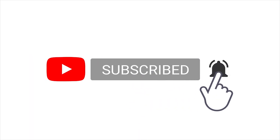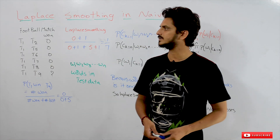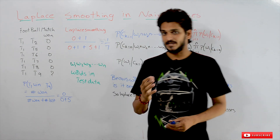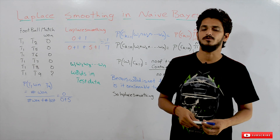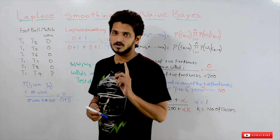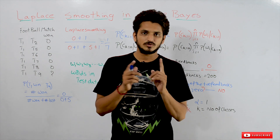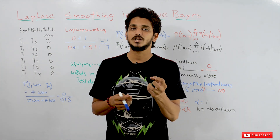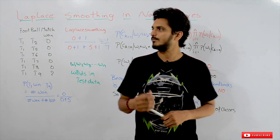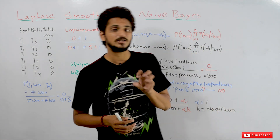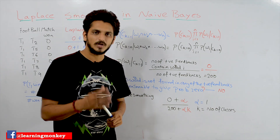Hi, welcome to Learning Monkey, I am Raghu. In this class we will discuss Laplace smoothing in Naive Bayes. This is an extension class — we already discussed the Naive Bayes model, its general intuition, and the basic mathematics. Based on the assumption that you have already watched those classes, we are dealing with this class. If you haven't, please watch those first and come back. Now, to understand Laplace smoothing, we will first look at a general example and then apply it to our Naive Bayes model.